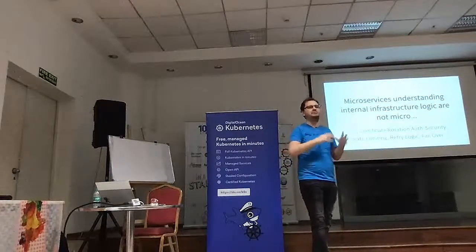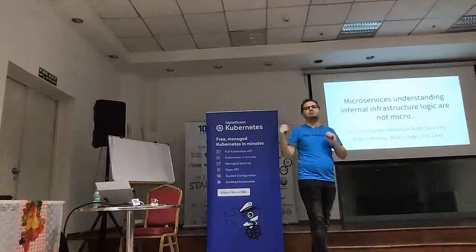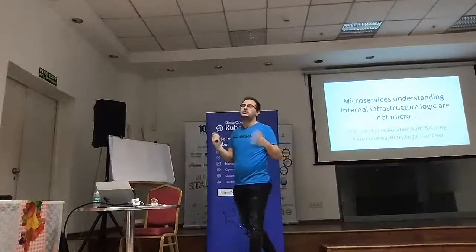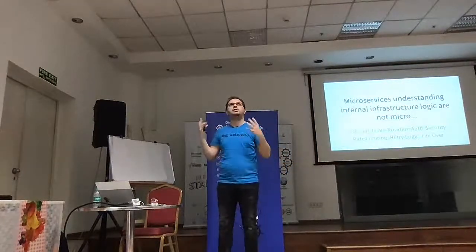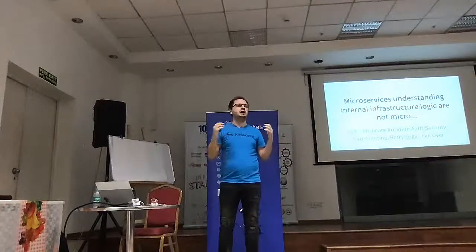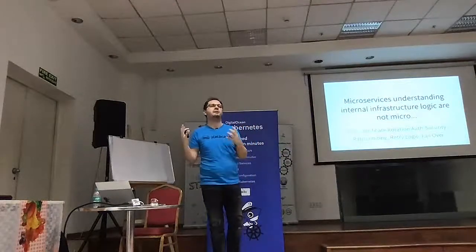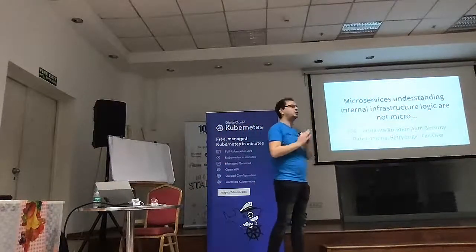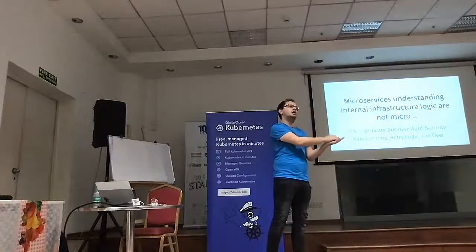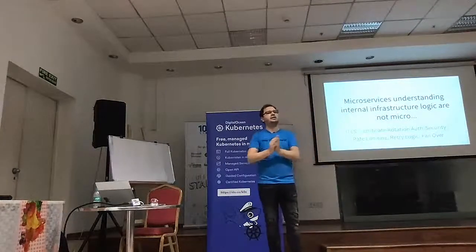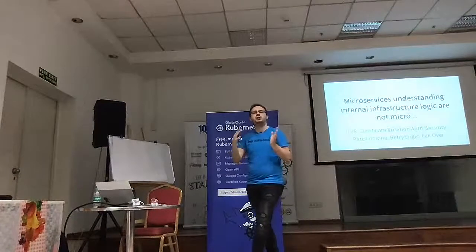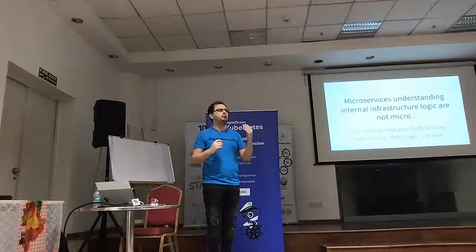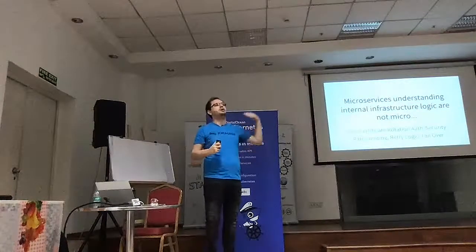We end up with these micro-monoliths all solving the same problems, all deployed on top of our systems. This repeatability of infrastructure-related topics is just noise — we want to remove that from our microservices, let the infrastructure deal with that layer, so our microservices can focus on business value. Kubernetes is doing an amazing job at supporting our applications, and we can use service meshes to build on top of that and provide even more value.